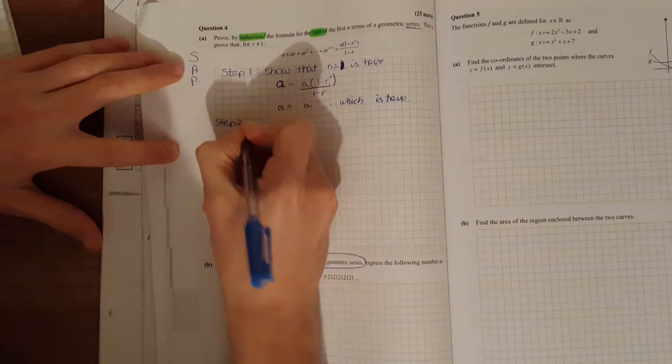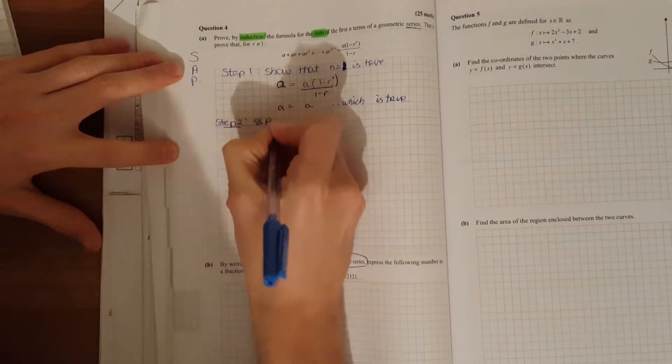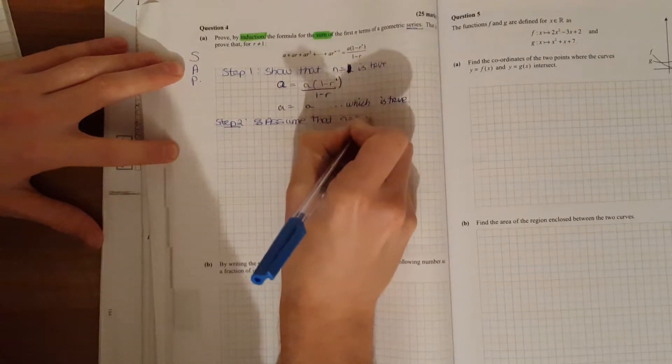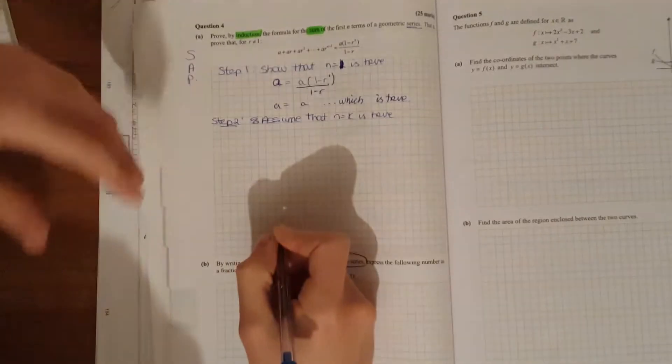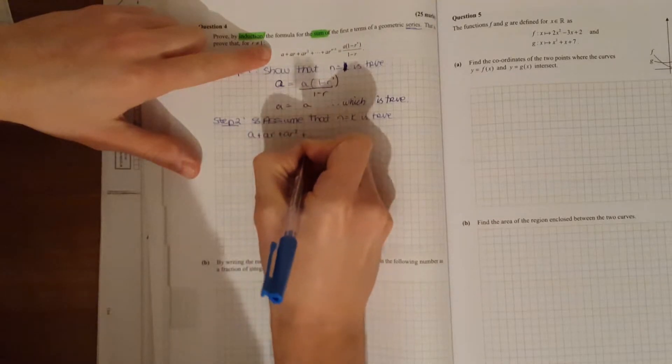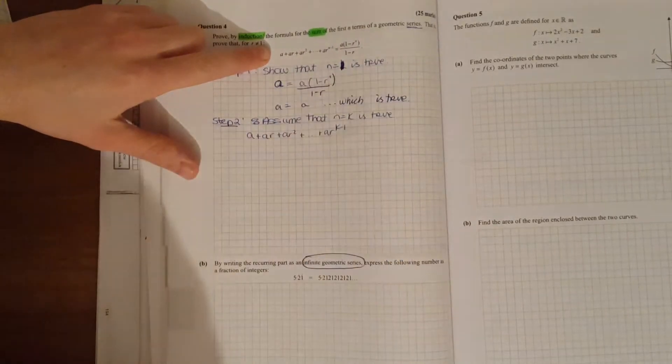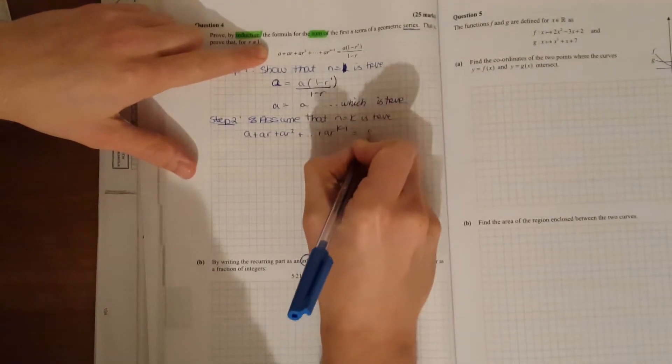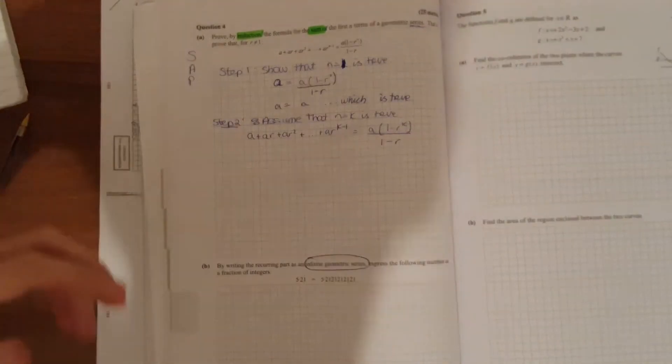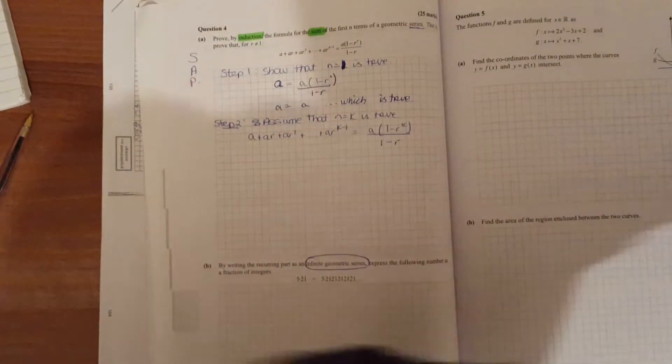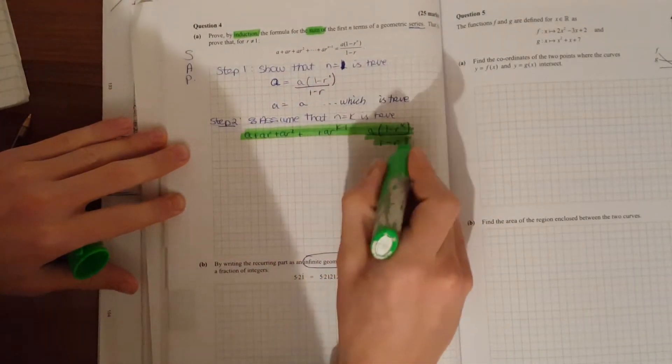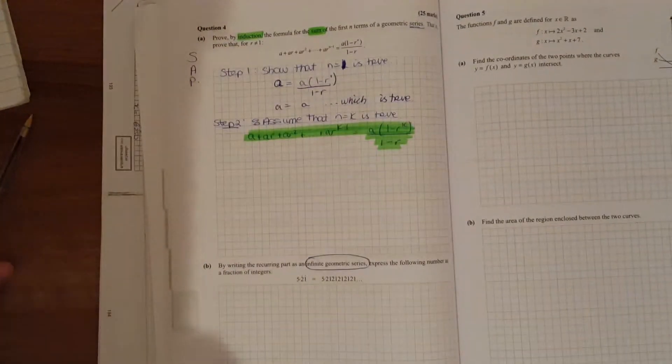Step 2 is our assumption. Assume that n equals K is true. So simply just replace the n with the K. This is what we always go back to. Always go back to the assumption, so highlight that for yourself so you remember to go back later on if you come across difficulties.